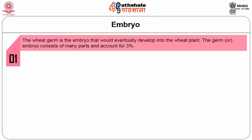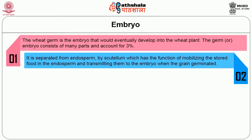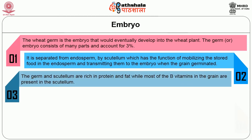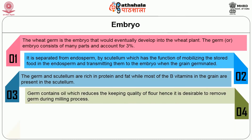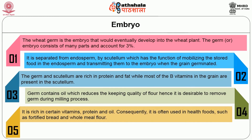Next we will move on to the embryo. The wheat germ is the embryo that could eventually develop into the wheat plant. The germ or embryo consists of many parts and accounts for 3 percent of the wheat grain. It is separated from the endosperm by the scutellum, which has the function of mobilizing the stored food in the endosperm and transporting it to the embryo when the grain germinates. The germ and scutellum are rich in protein and fat, while most of the B vitamins in the grain are present in the scutellum. Germ contains oil which reduces the keeping quality of flour; hence it is desirable to remove the germ during the milling process. It is rich in certain vitamins, protein and oil, and consequently is often used in health foods such as fortified bread and whole meal flour.